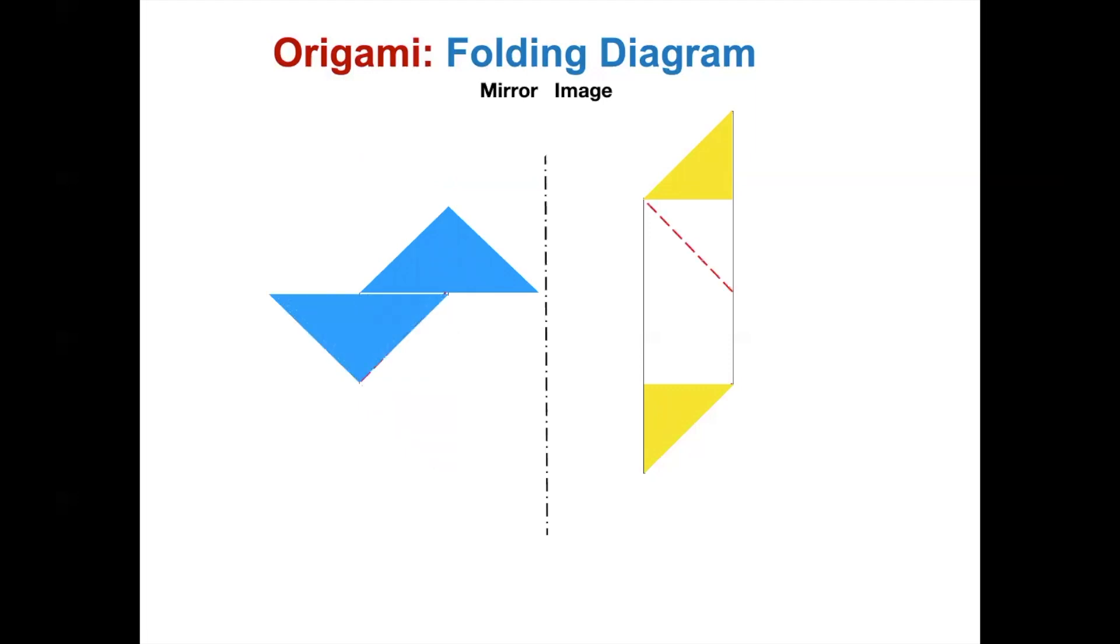Move on to the second module to complete the folding. You may pause the video, try to fold it before the demonstration. These two modules will be assembled into a Ninja Star. Now let's look at the demonstration.